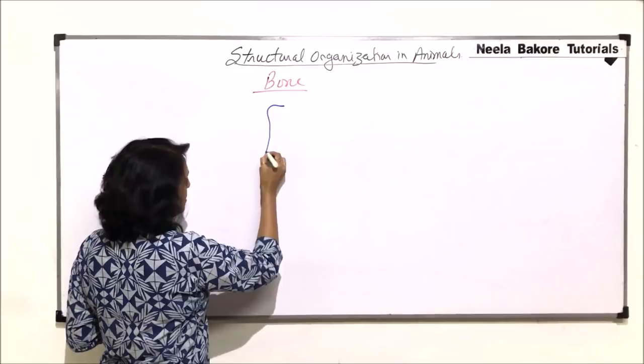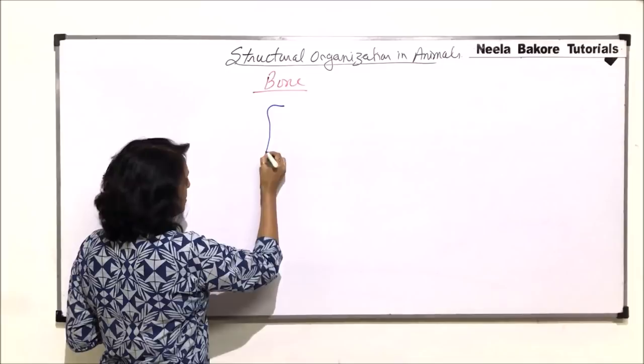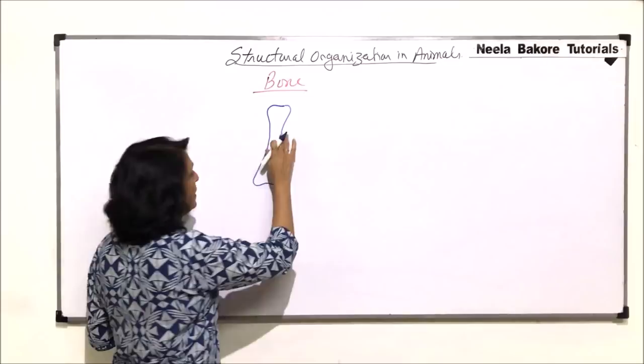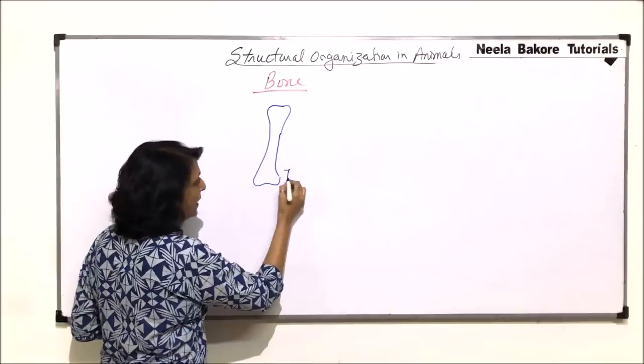But before that, we'll talk about a long bone. Suppose we draw the structure of this long bone. We know that it has two main parts: the head part which is at the end and a narrow shaft part which is in the middle. These parts are given names.